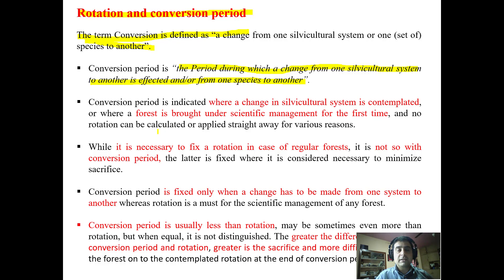The crop or the forest cannot instantly be converted from one silvicultural system to another. It takes time, and that time is known as the conversion period. Another aspect could be that we want to change one species — say it is a deodar species and we want to convert it into a pine forest. That will also take a time period and cannot be done instantly; the time taken will be called the conversion period.